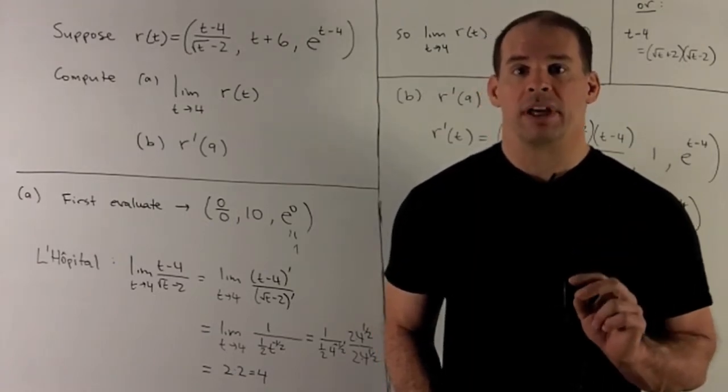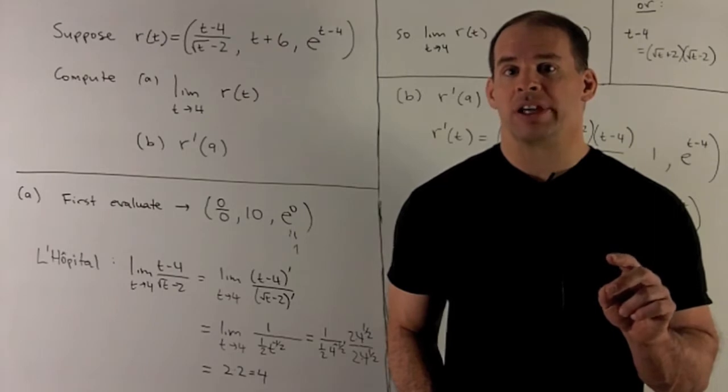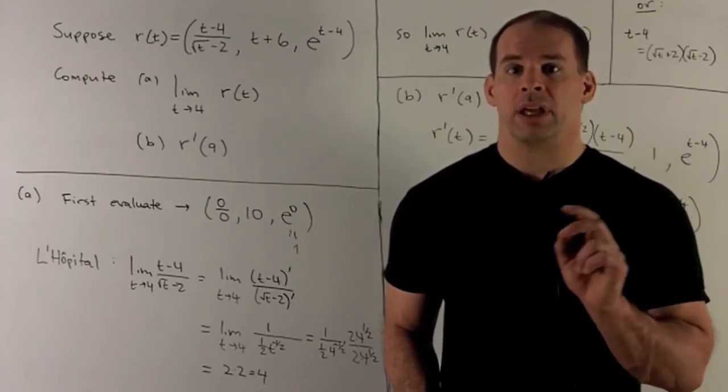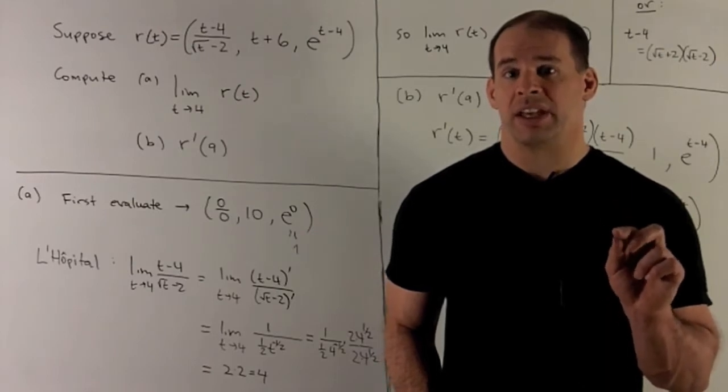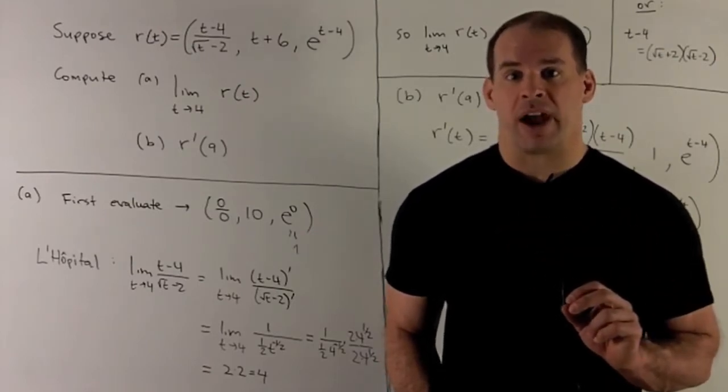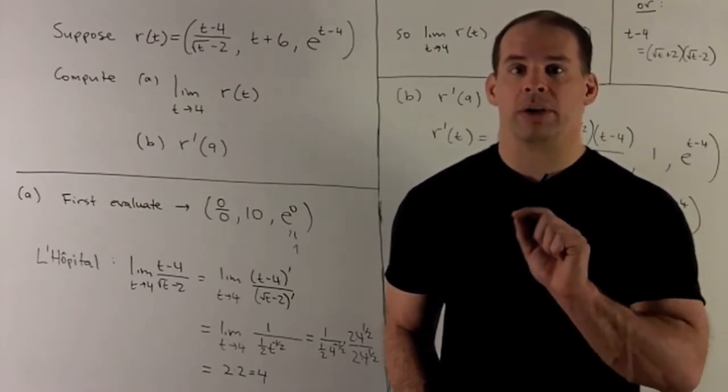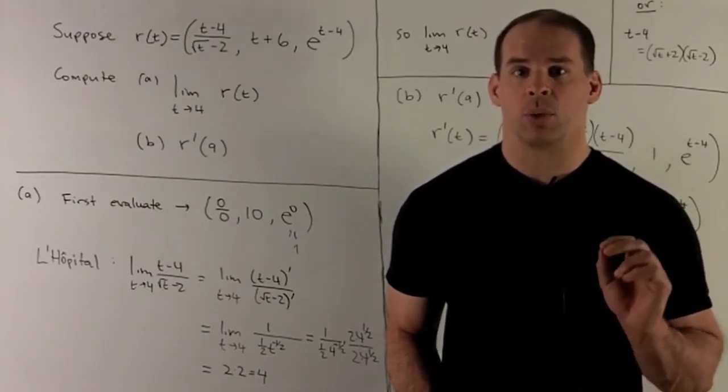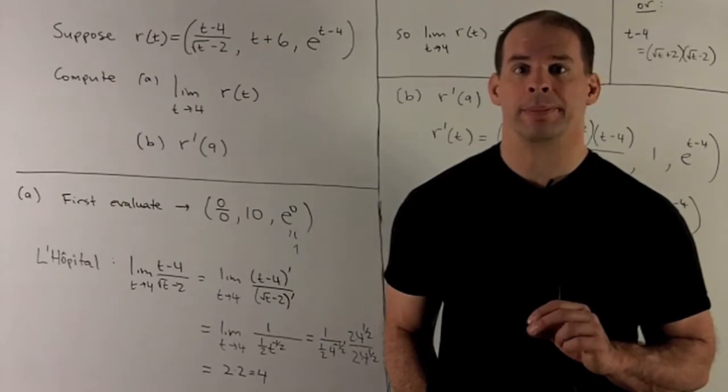For limits and derivatives, the procedure is to evaluate the limit or derivative for each component. If it makes sense in each component, that's your answer. If something goes wrong in any component, you'll end up with does not exist or no answer.